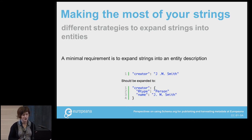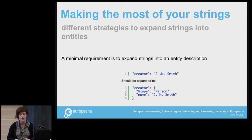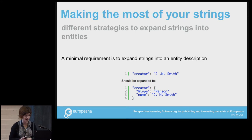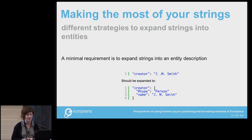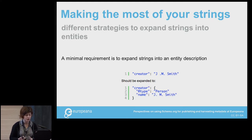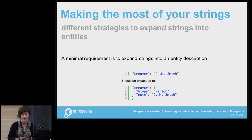A second problem was defining strategies to map our record-centric view in EDM to the entity view proper to schema.org. Schema.org follows linked data principles — things are described based on entities. In Europeana we still have a record-based vision, meaning many entities still exist as strings in our data. We do enrichment work, so sometimes we have a URI to a fully fledged resource, but sometimes only strings. The minimal requirement is to expand strings into an entity description — giving a creator a name and type — which is mostly implemented as a blank node.